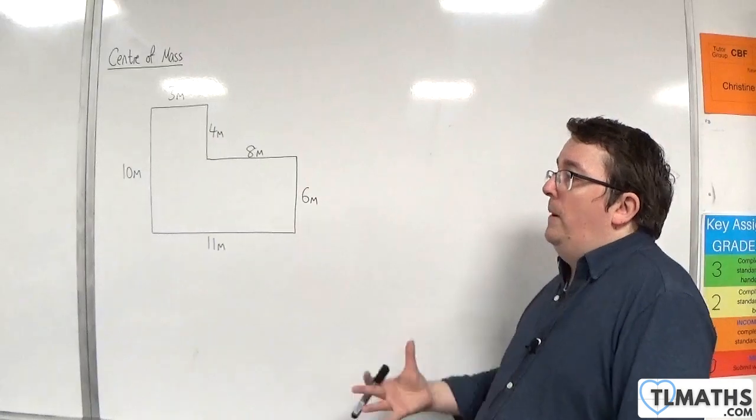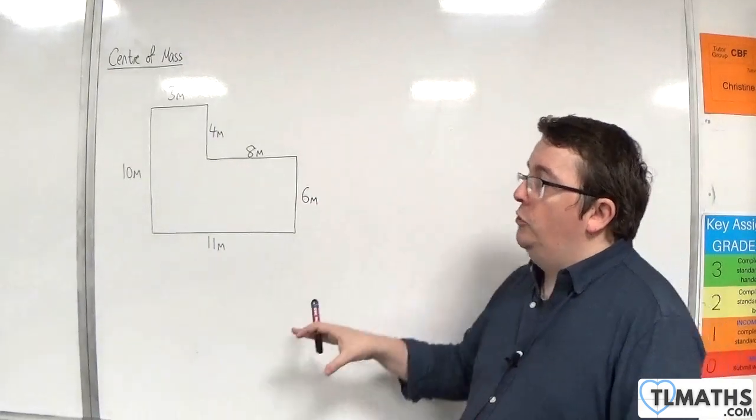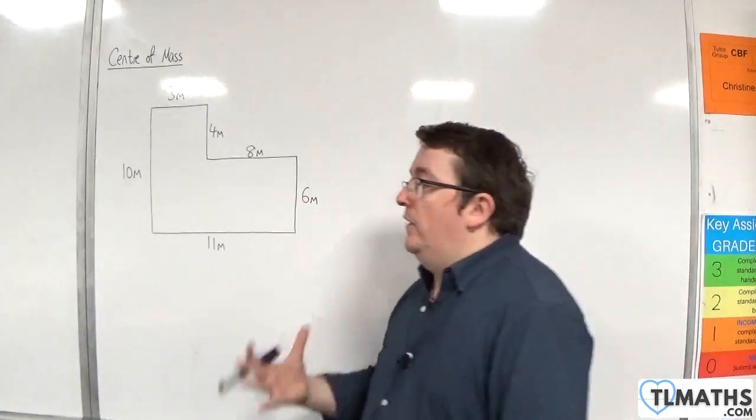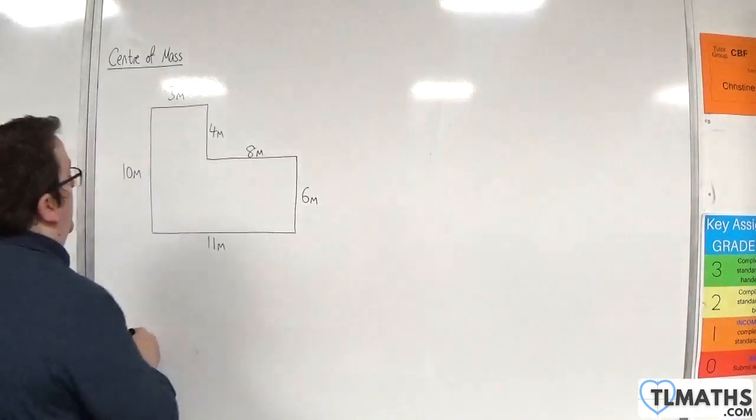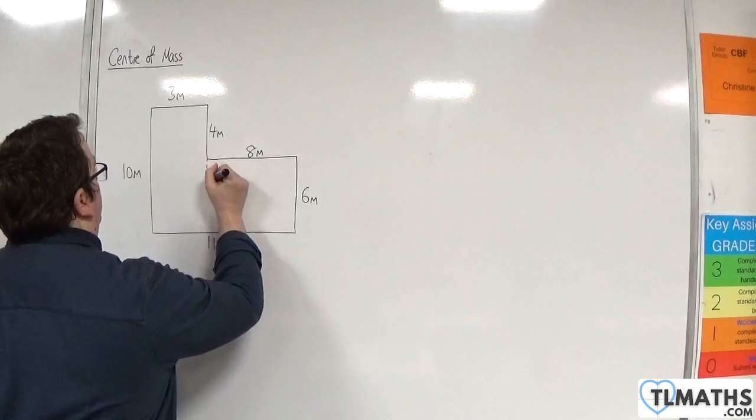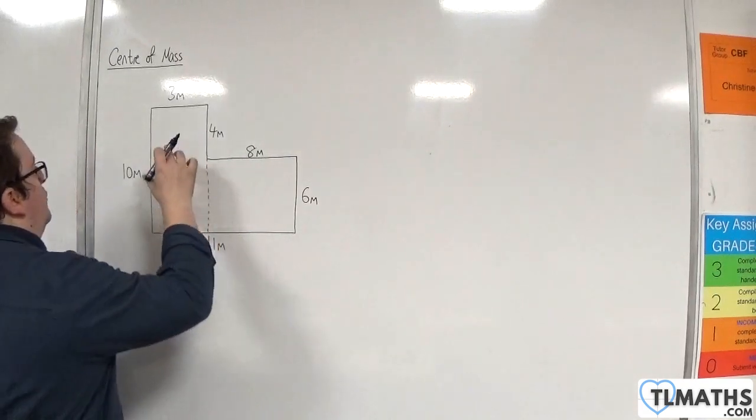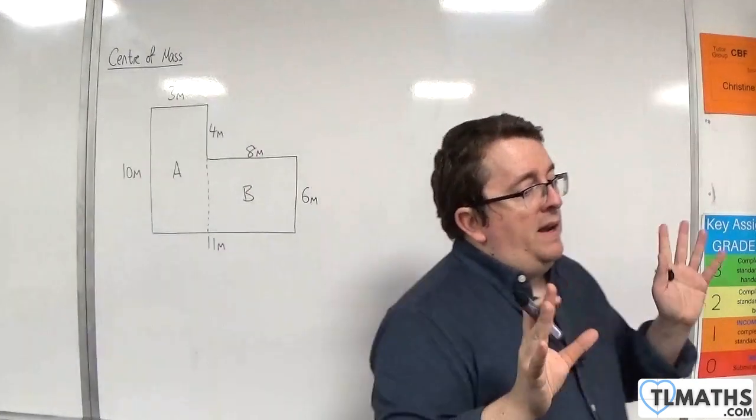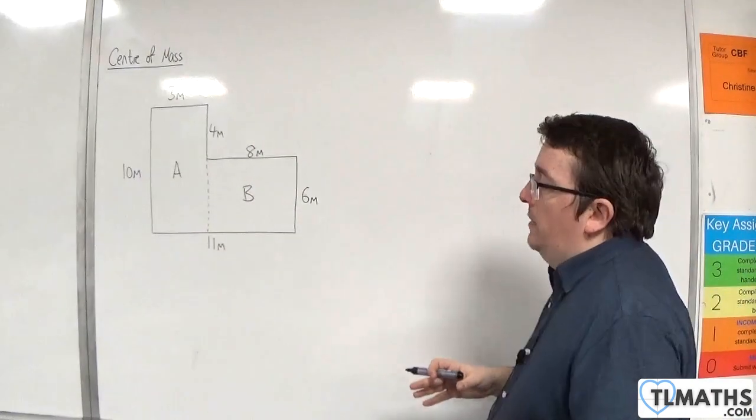What you want to do is split this up into two rectangles. How you split it up is really up to you, it doesn't matter. I'm going to split it up this way, so I've got rectangle A and then rectangle B. If you split it up in a different way you should still get to the same answer.